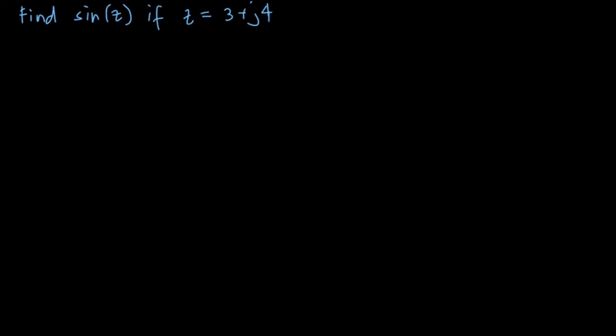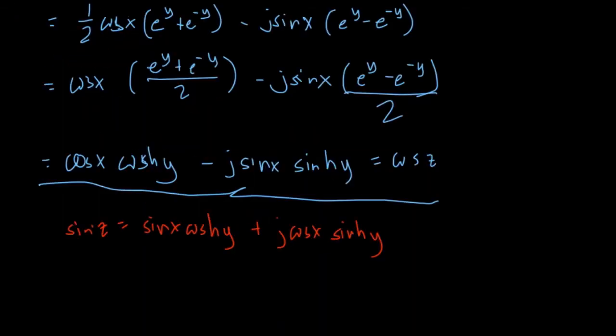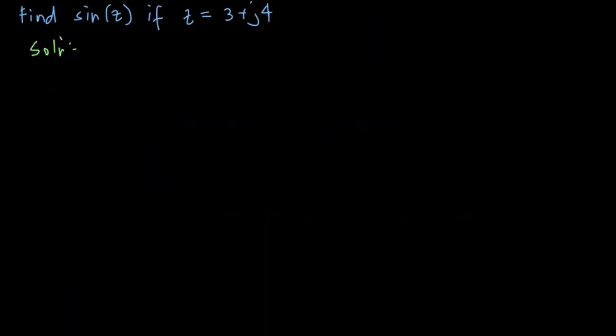So right here our solution. If you are going back to our previous examples or previous derivation, this is the formula for getting the sin of a complex number. So sin x hyperbolic cos y plus j cos x hyperbolic sin y. So let's just use that one.